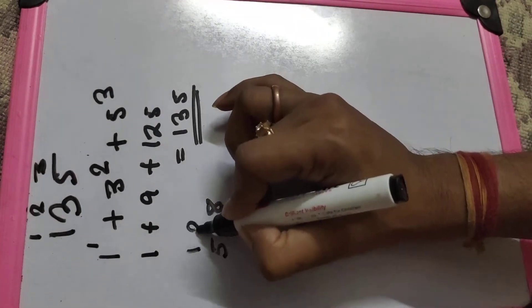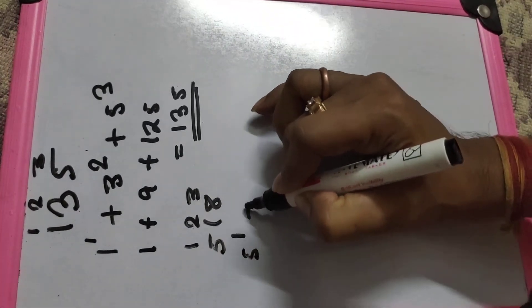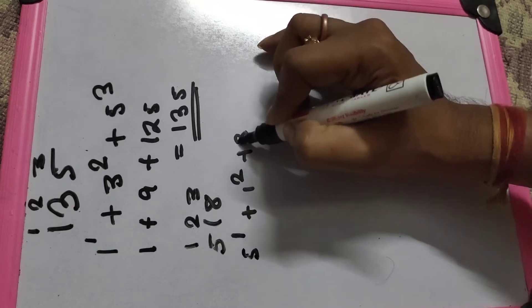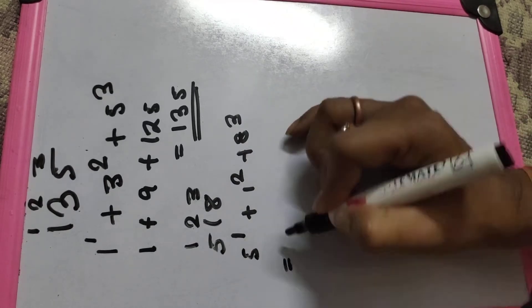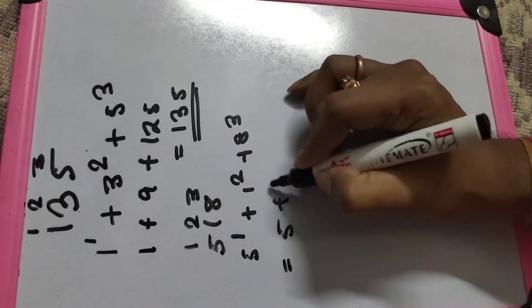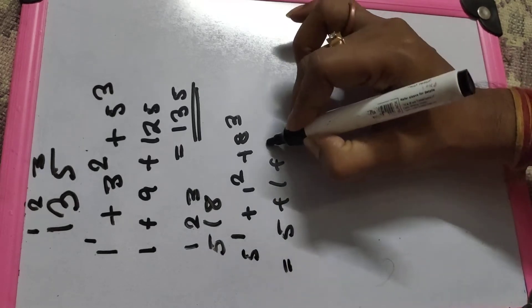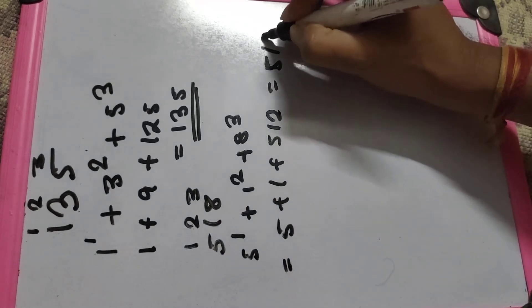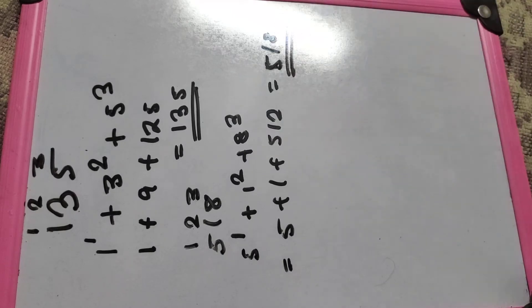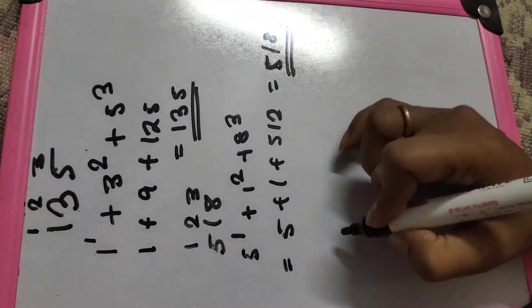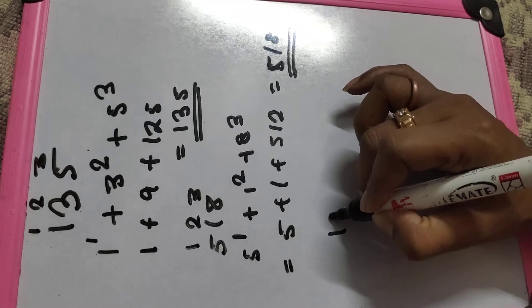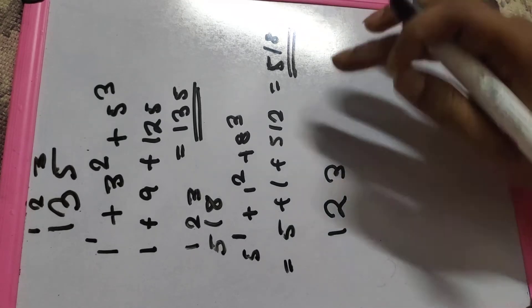Next, we check 518. Position one, position two, and position three. So 5 to the power 1, plus 1 to the power 2, plus 8 to the power 3 — that means 5 plus 1 plus 512 equals 518. So 518 is also a Disarium number.